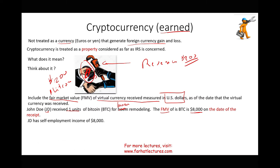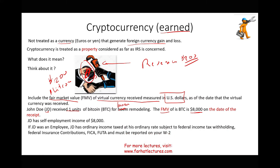If you're self-employed, you include this in your income. If you're an employee paid in Bitcoin, you also have ordinary income subject to federal income tax withholding, Social Security, FICA, FUTA, and it must be reported on your W-2. It's as if they paid you cash — the amount is the value of the currency on the date you received it.